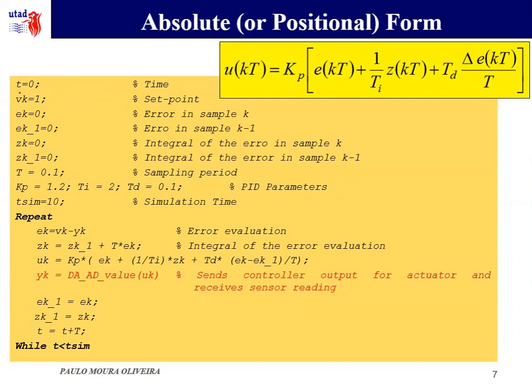I am not going to explain in detail this algorithm, but you can test or implement it easily. I use a variable T for the time, VK for the set point, EK for the error in sample K, EK-1 for error in the sample K-1, ZK is the integral and ZK-1 is the integral in the previous sample, using a sampling time of 0.1 seconds. And these constants for the PID controller, KP, TI, and TD, a simulation time of 10 seconds. The cycle is this one, until the time is smaller than the simulation time.